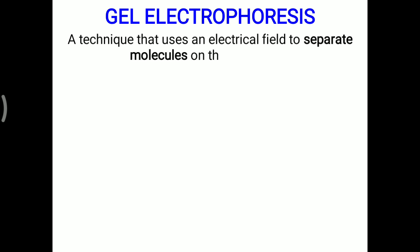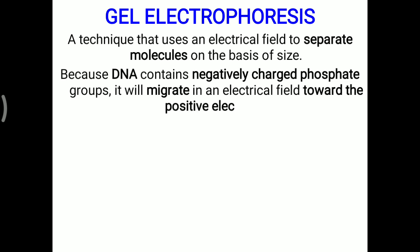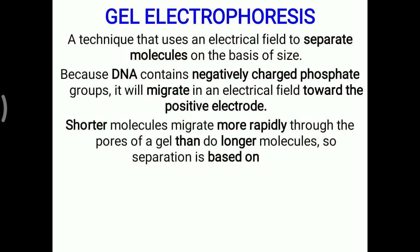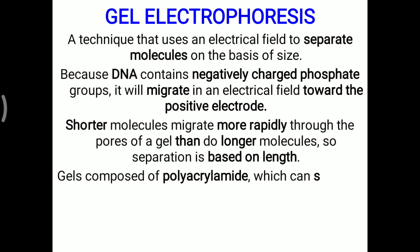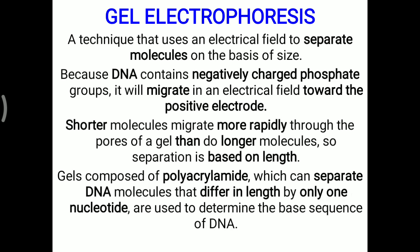Sometimes hybridization and probe utilization require gel electrophoresis. Gel electrophoresis is a technique that uses an electrical field to separate molecules on the basis of size. Because DNA contains negatively charged phosphate groups, it migrates in an electric field towards the positive electrode. Shorter molecules migrate more rapidly through the pores of a gel than longer molecules. Gels composed of polyacrylamide can separate DNA molecules that differ in length by only one nucleotide and are used to determine the base sequence of DNA.